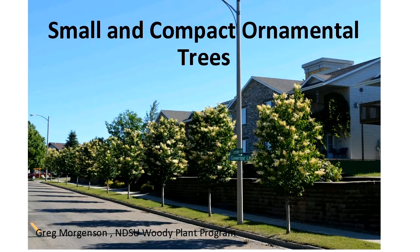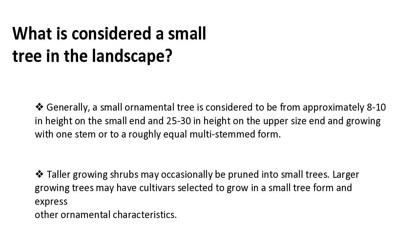What I'm going to do is go through some of the small trees and tell you a little about what's considered a small tree. We're all familiar with elms, ash, and spruce which are 50, 60, 70 feet tall, but smaller trees are pretty much only about a half to a third of that size — so we're talking about on the very small end maybe 8 to 10 feet in height, and up to about 25 to 30 feet on the larger end of small.